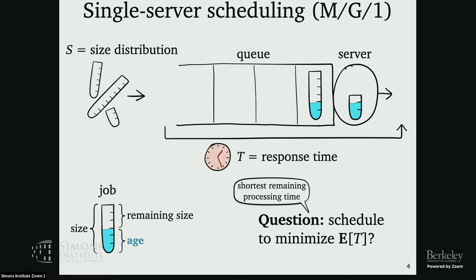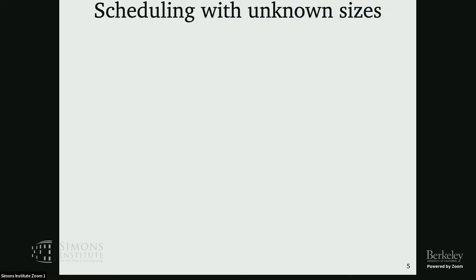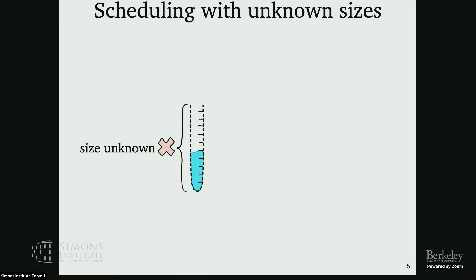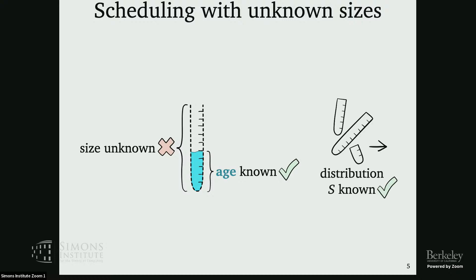What about scheduling with unknown sizes? It looks like I have a test tube, but I don't know how tall it is — I just fill it with water, and at some point the test tube will politely inform me it's done and exit the system. How should I schedule in this world? One thing we can use is each job's age, since we can measure how long we've spent serving it. It's also reasonable to assume we know the job size distribution, say from historical data.